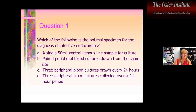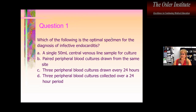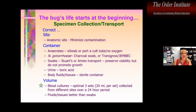Question number one: which of the following is the optimal specimen for the diagnosis of infective endocarditis? Is it a single 50 mL central venous sample per culture, a paired peripheral blood culture drawn from the same site, three peripheral blood cultures drawn every 24 hours, or three peripheral blood cultures collected over a 24-hour period? Those who selected D did really well.